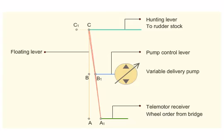As the rudder starts turning, the hunting lever will move from C to C1, pushing the floating lever. This will bring back the pump control lever to position B and the pump will stop discharging. The rudder will remain in this position, port side, till the next order is given.